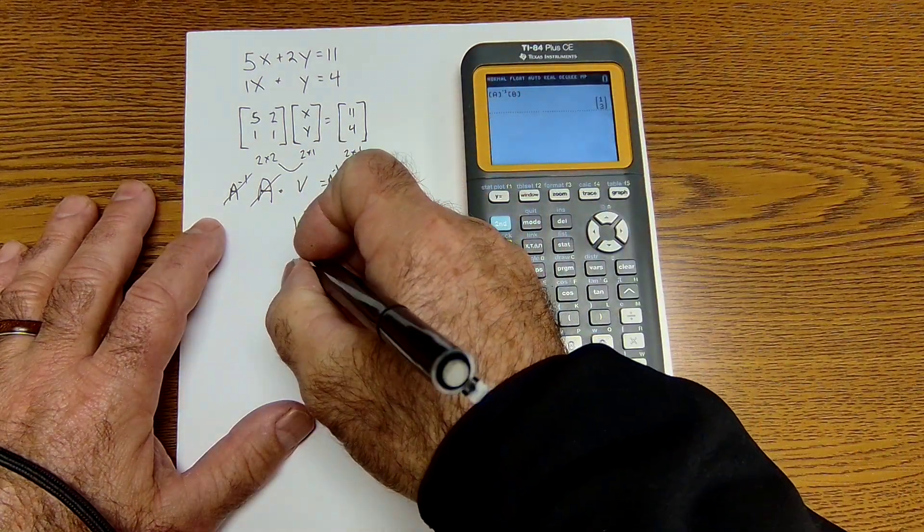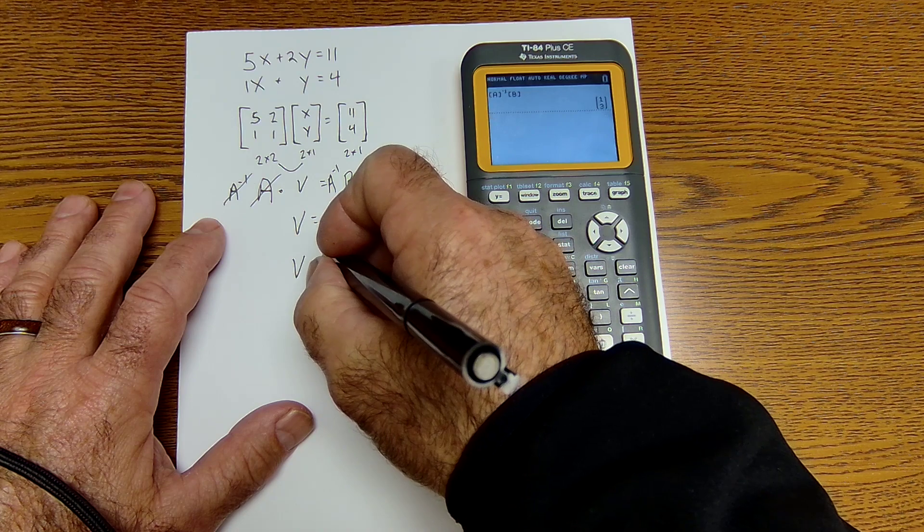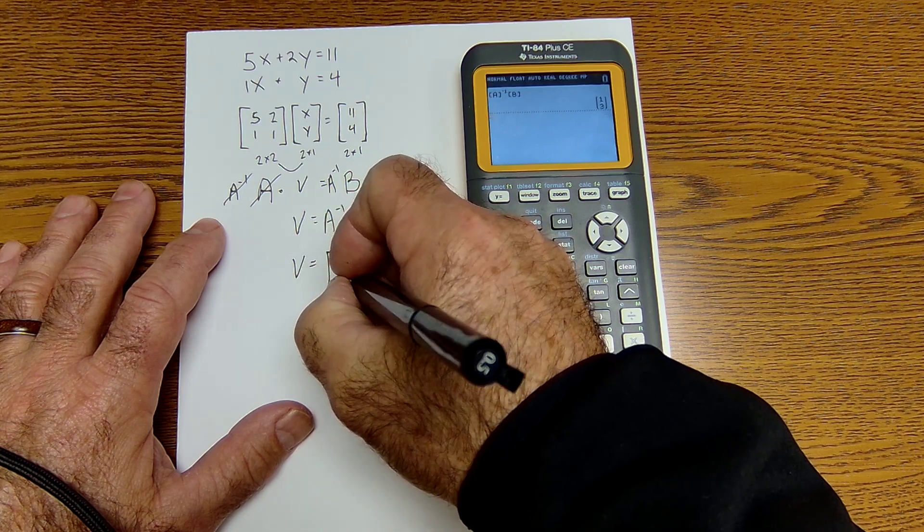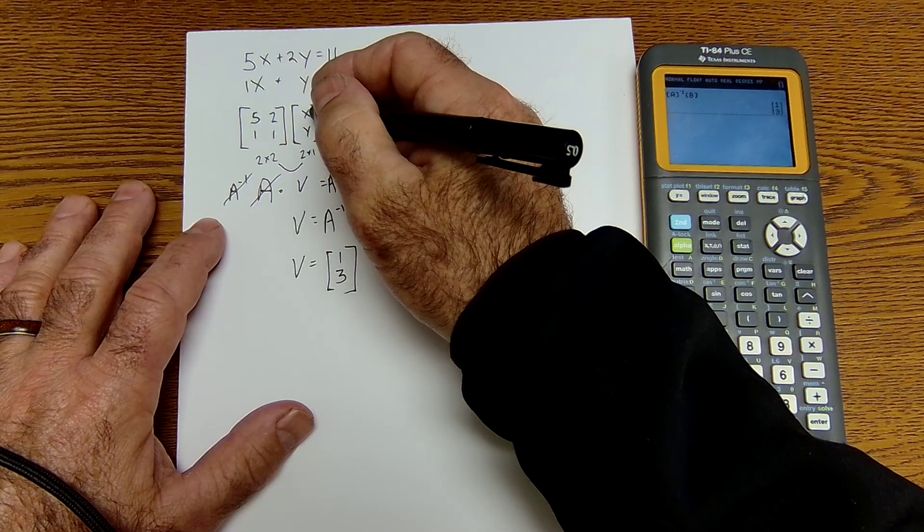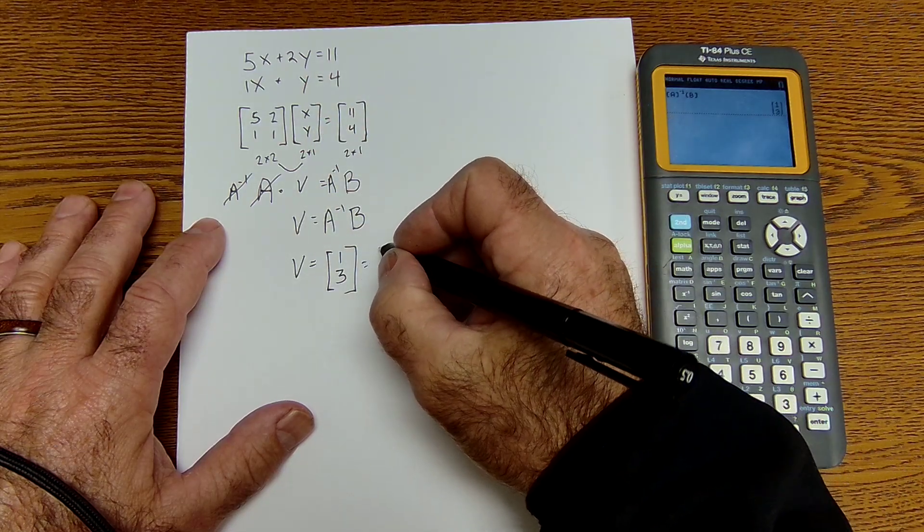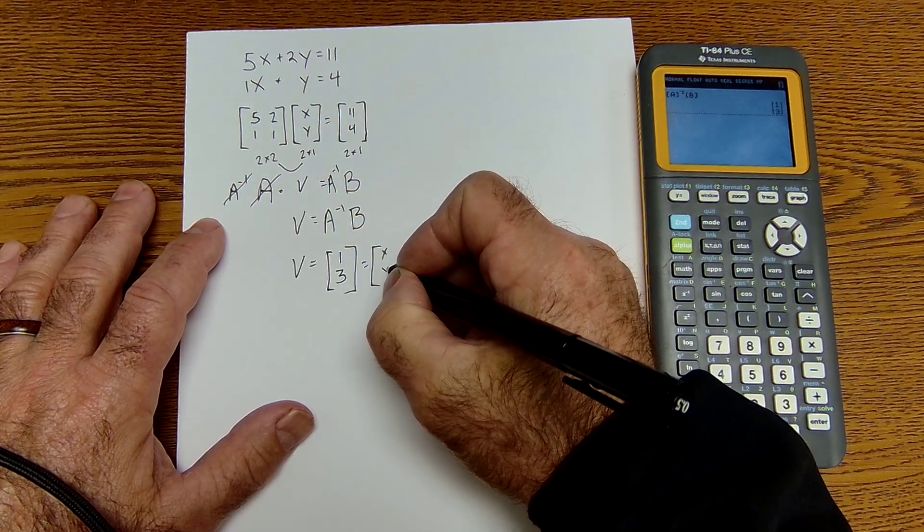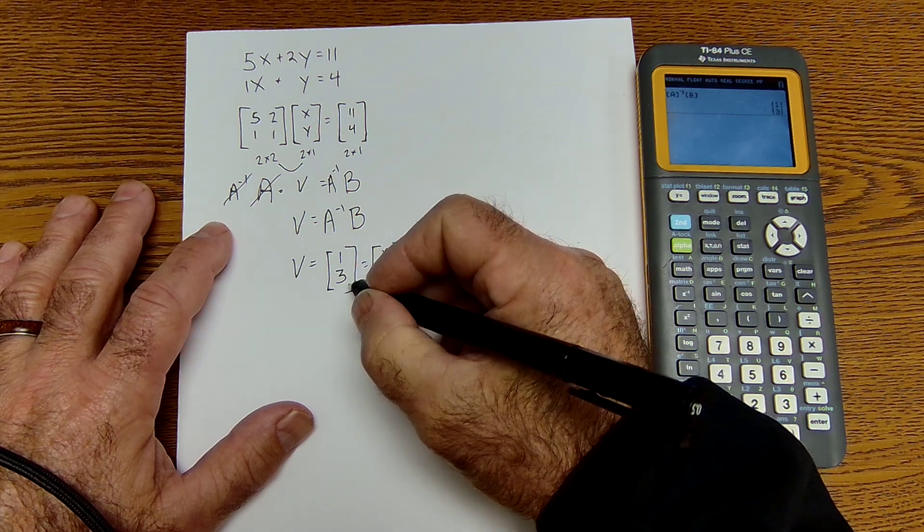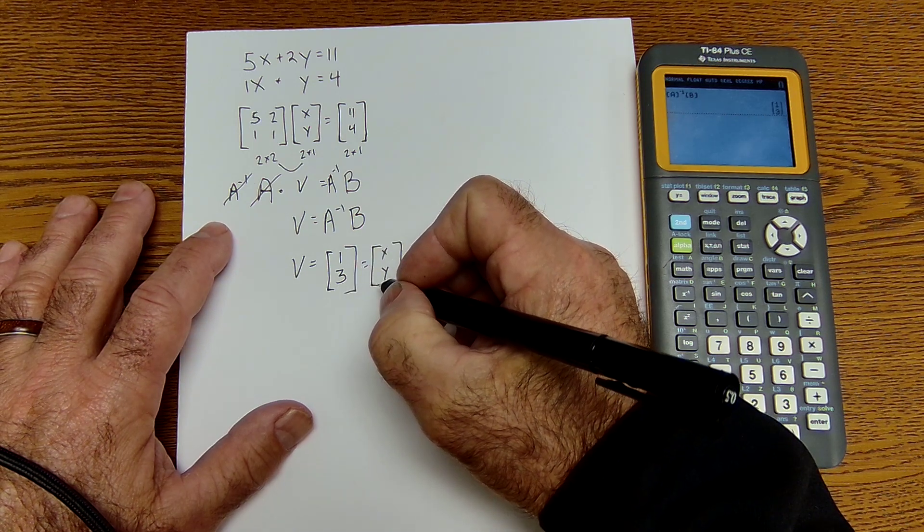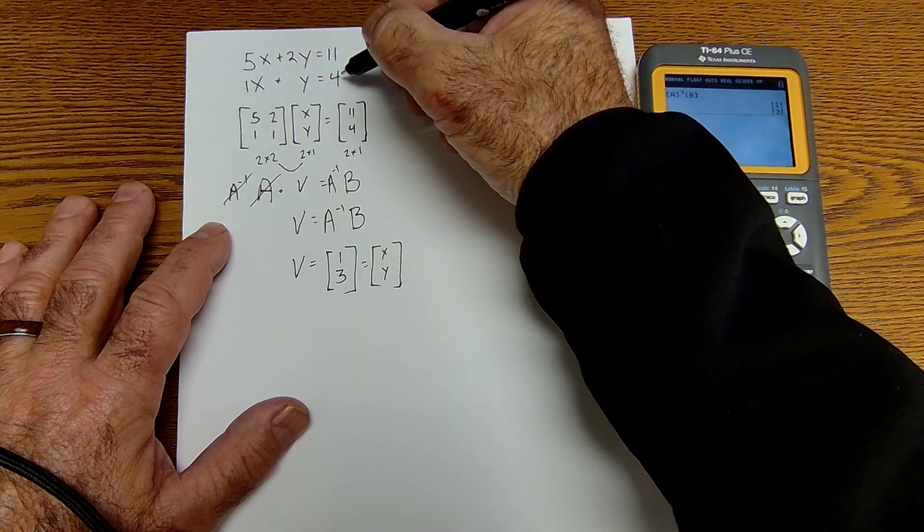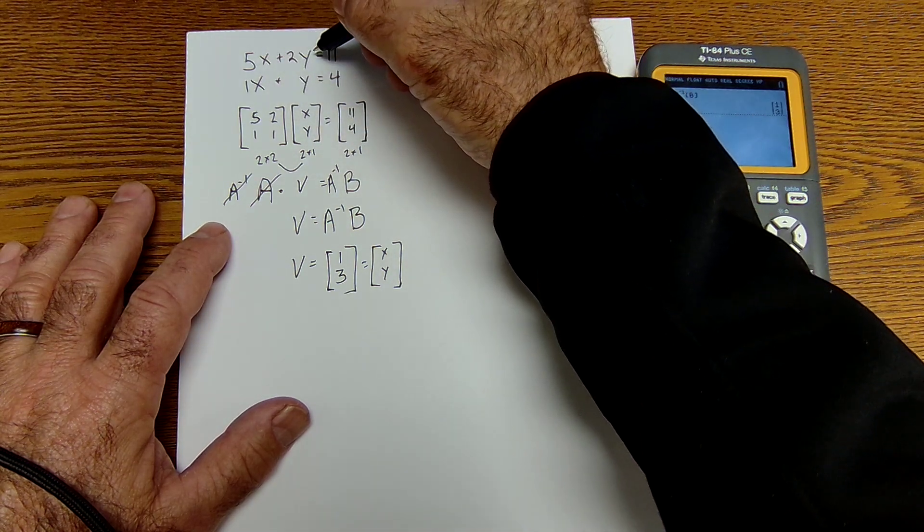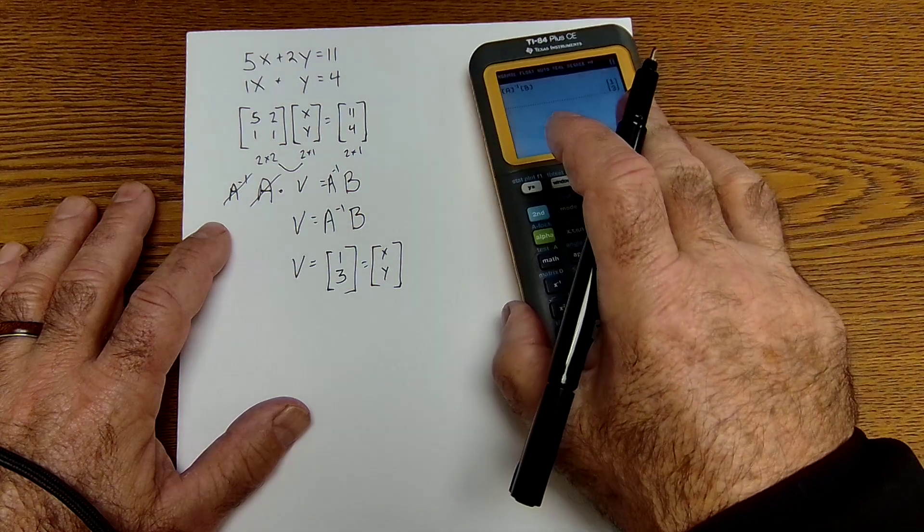So my variable matrix here is equal to 1, 3. And that is still going to be equal to x, y. So I have an x value of 1, a y value of 3. Just double check that. 1 plus 3 is 4. Works there. 5 plus 6 is 11. So I can see it works in both cases.